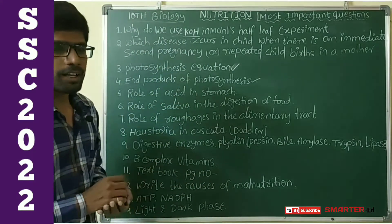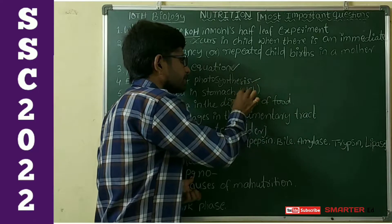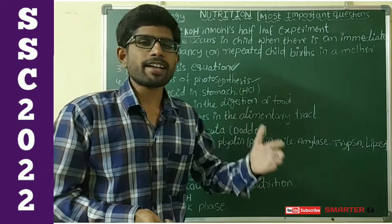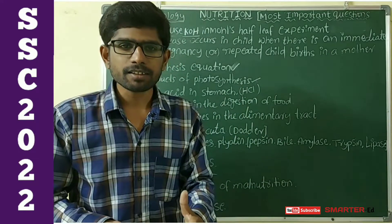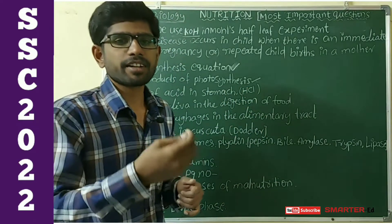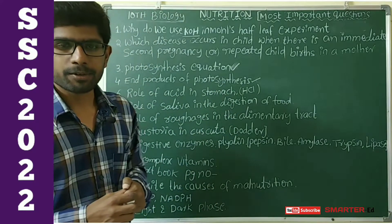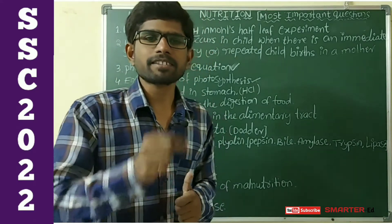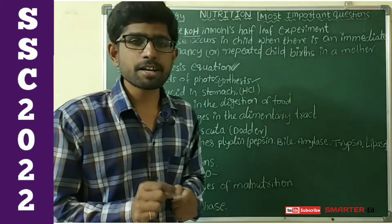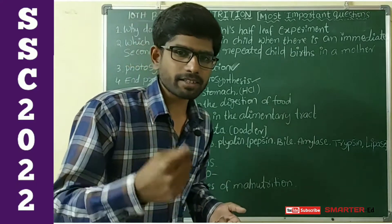Next, the role of acid in the stomach. In our stomach we have HCl acid. What is the role of this acid? HCl activates pepsin, which is a digestive enzyme that acts on proteins. It also kills the germs which enter the stomach through food.